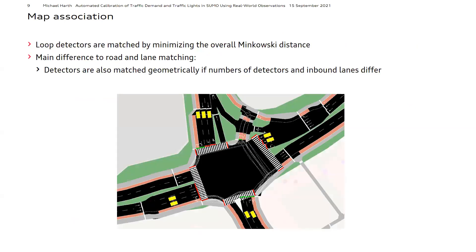For detector loop matching, the same process is applied to minimize the overall Minkowski distance between inbound lanes and detector positions. The key difference is that detectors are also matched and paired even when the number of detectors and inbound lanes differ. For example, on the left and right roads shown here, there are only two detectors but three ingoing lanes to the junction.